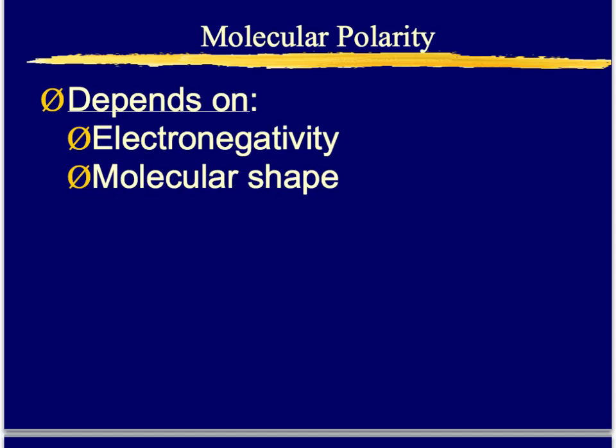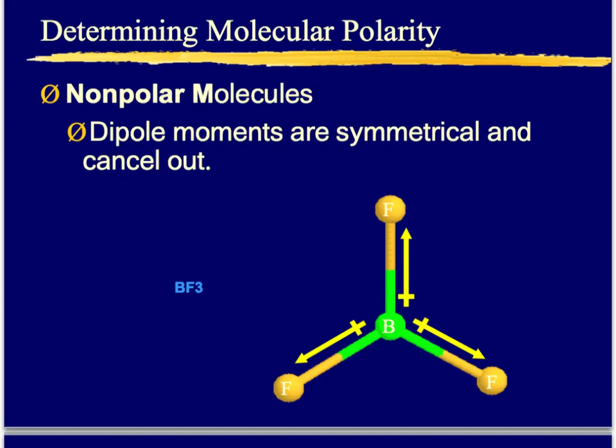While electronegativity plays a large role in determining if a molecule is polar, the shape of the molecule can also help determine polarity. Here's a good example of a nonpolar molecule — boron trifluoride (BF3). You might see those dipoles and think it's polar, but notice that the boron is being symmetrically pulled by the three fluorines, so the dipole moments cancel each other out. The electrons are distributed equally throughout, which is why we describe BF3 as a nonpolar molecule.